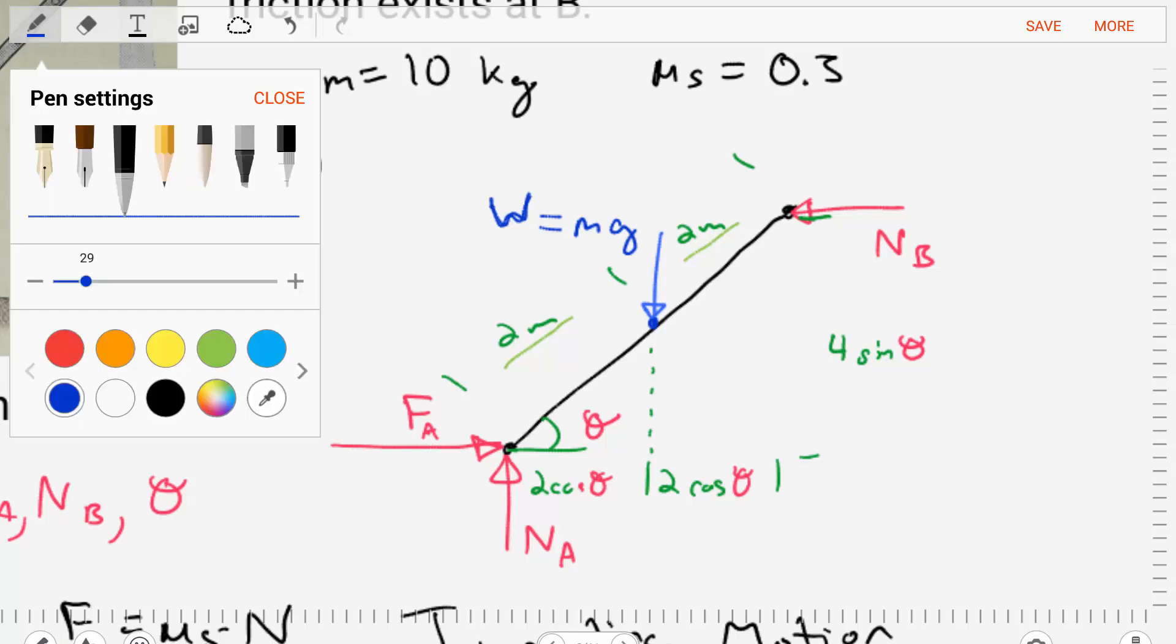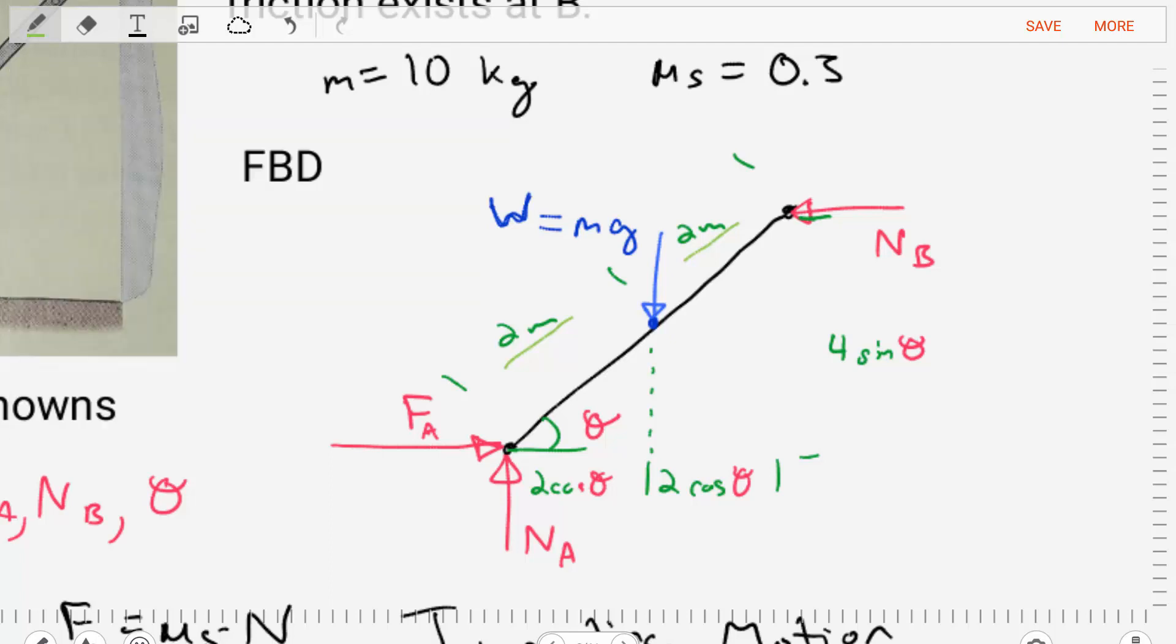The next thing we'll do is we'll get other dimensional information about this structure. It's going to be important to do that now rather than later. We want to break this ladder up into its x and y components. It is 4 meters long and it's at an angle of theta. So if we break up and we wanted to find the opposite component, that component would be 4 meters times the sine of theta, right?